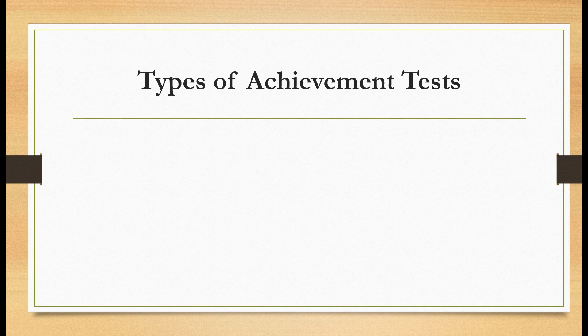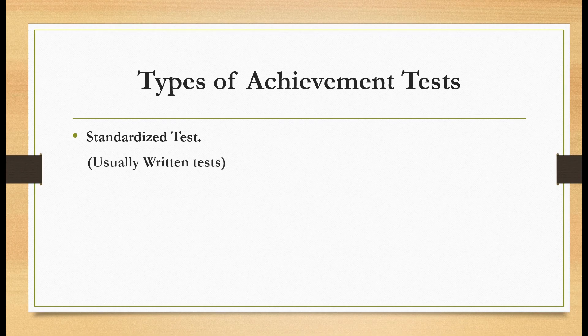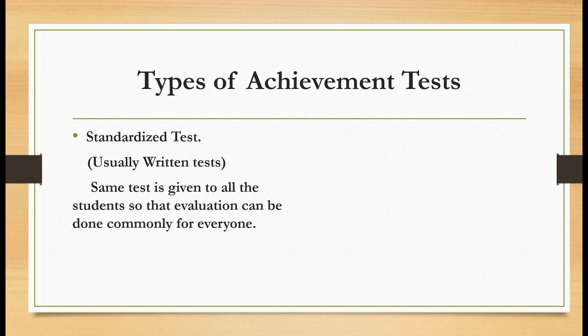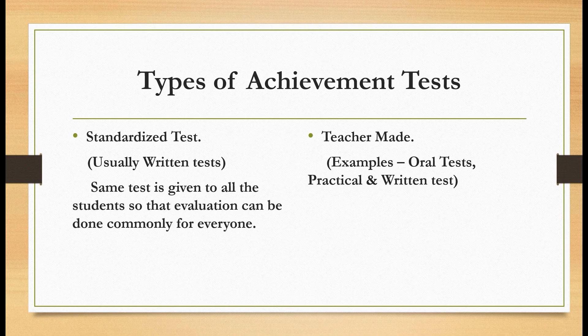Types of achievement tests. The first type is the standardized test, which is usually in written format, where the same test is given to all students so that evaluation can be done commonly for everyone. The second type is teacher-made, which is totally at the discretion of the teacher. Common examples are oral tests and practical tests. Teacher-made tests can also be in written format where every student will have a unique assessment, meaning the test for one student will be different from another.